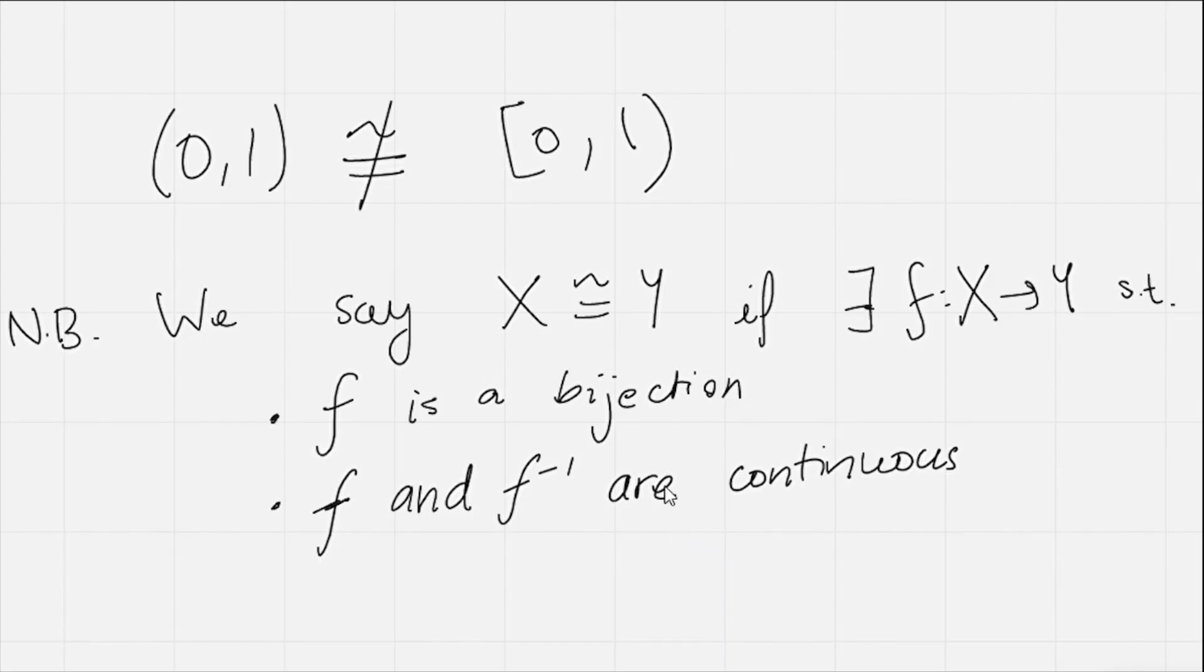So that's what it means for two sets to be homeomorphic. We want to prove that these aren't homeomorphic. In other words, there doesn't exist any function f with these properties. Let's get stuck in.